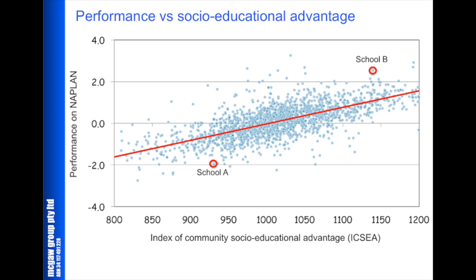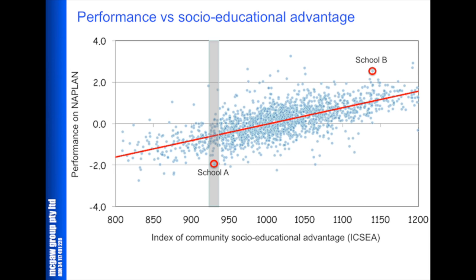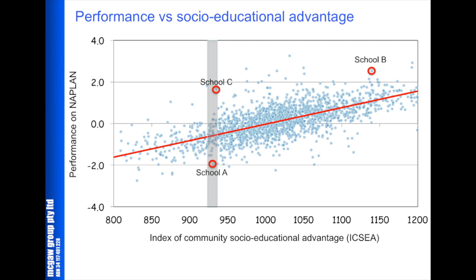In some countries, analyses suggest School B is a school from which School A could learn. I think that's nonsense. School A would say: how could I learn from School B? Its context is so different; its students are so much more privileged than mine. But School A could learn from schools with students of a similar background — and this is precisely what My School is for. School A could learn, for example, from School C: a school with students with exactly the same level of the index of socio-educational advantage, but performing very much better.